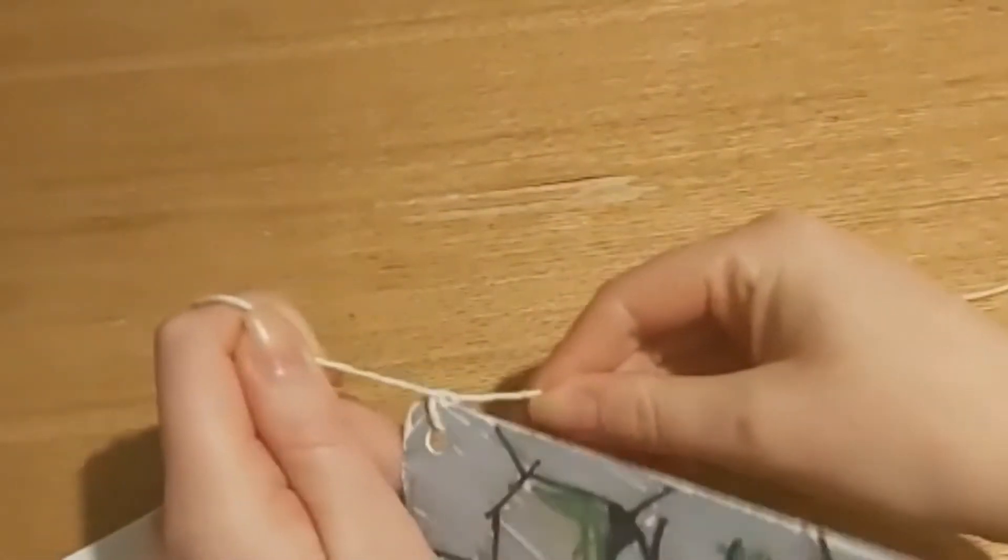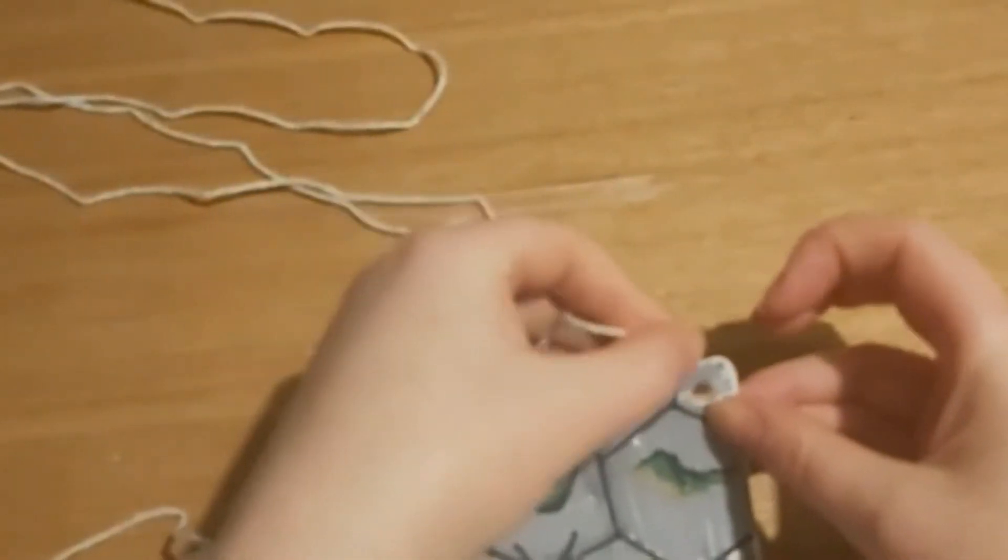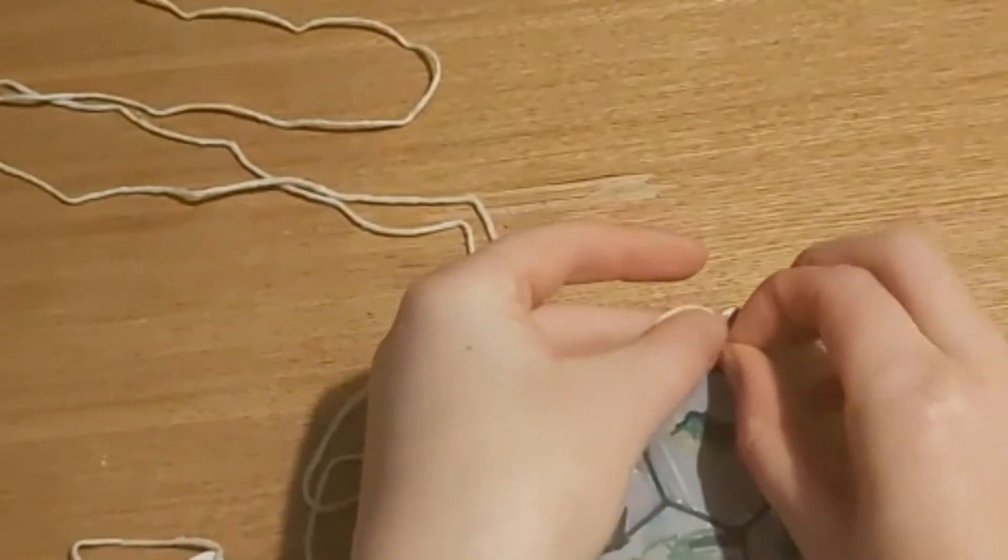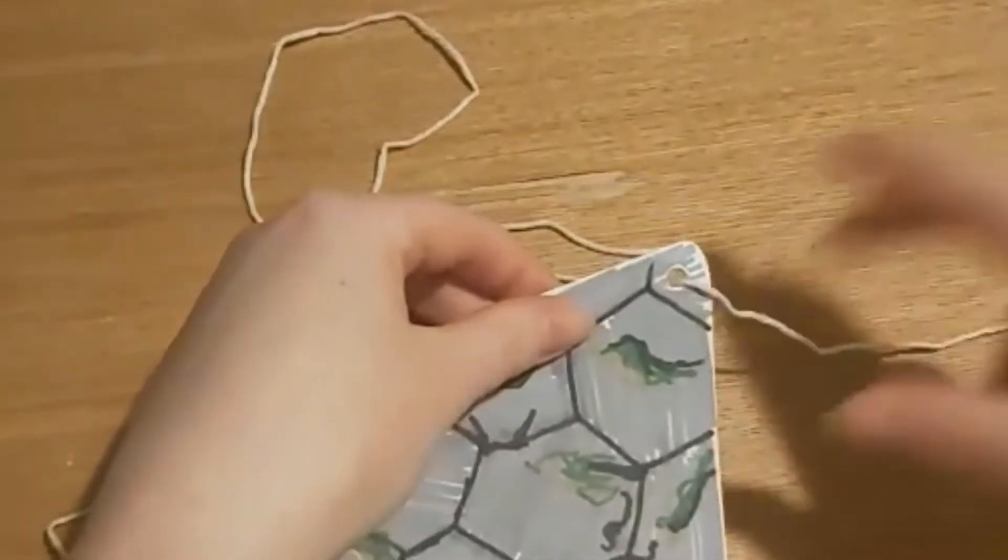I'm just going to do a knot on this bit here just like this. You don't need to do a knot on this side because this side will keep it where it is and then you just thread it through just like this and then it should stick on like that.